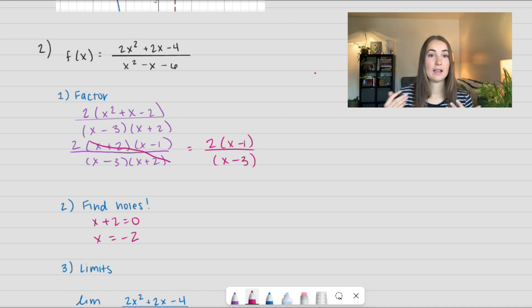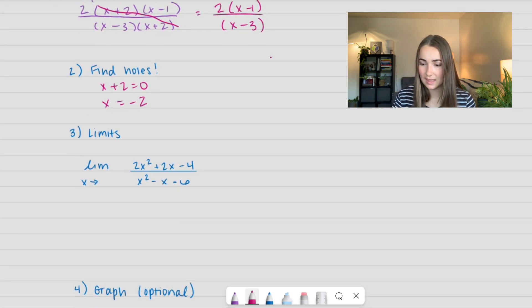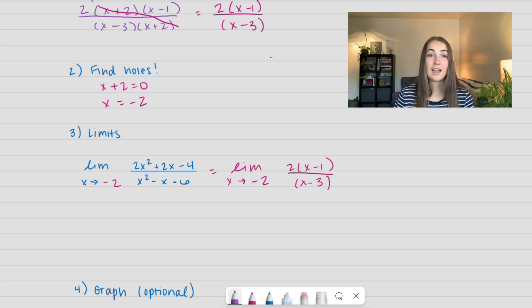Now we need to find that corresponding y value, and again I'm just going to use our more simplified value. So I have the limit as x approaches -2 of the original function, and now I can plug in our simplified. So here I can just use direct substitution. So I get 2(-2-1)/(-2-3).